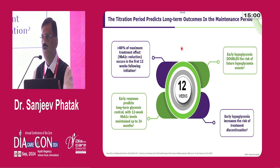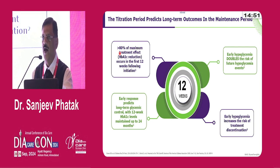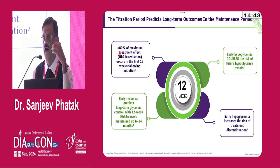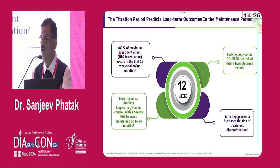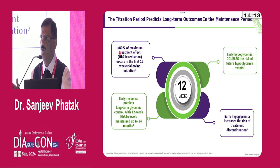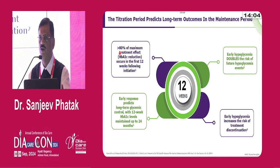Eighty percent of the maximum treatment effect — that is HbA1c reduction — occurs in the titration period of 12 weeks. If the HbA1c was 10 or 9.5, about 1.5 to 2 percent HbA1c lowering will occur within the first 12 weeks; thereafter the lowering will be minimal unless you are intensifying insulin therapy. The highest risk of hypoglycemia is also in the first 12 weeks, and because of that, the highest risk of discontinuation is also within first 12 weeks.